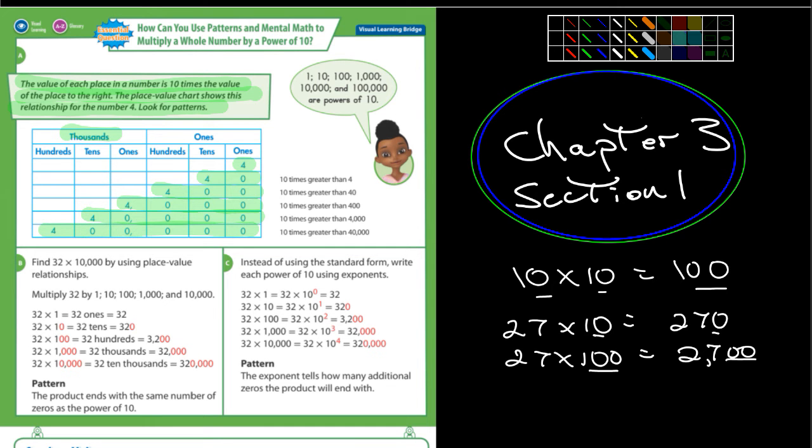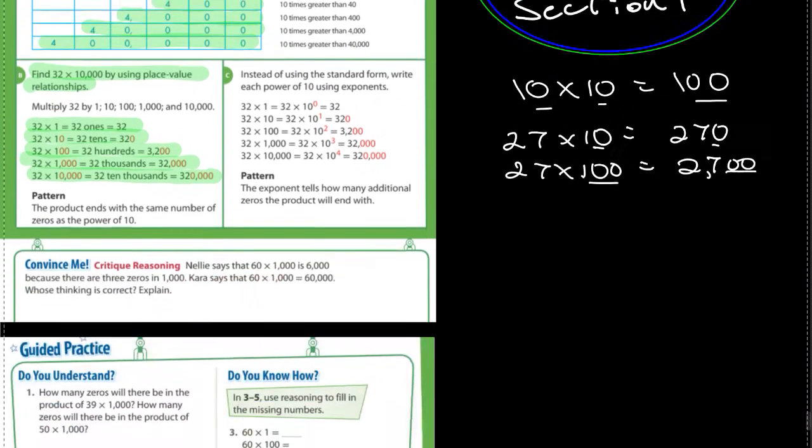Then they talk about, it says find 32 times 10,000 using the place value relationships. Well, here they have an example of 32 times 1, which is 32. 32 times 10 is 320. 32 times 100 is 3,200. And all you're doing is adding that number of zeros. So 32 times 10,000, you're adding four zeros. And the answer is going to be 320,000. So I think you guys can readily recognize those patterns.